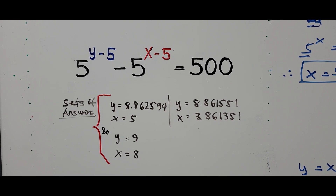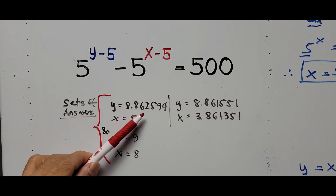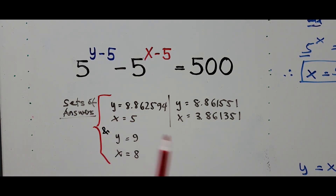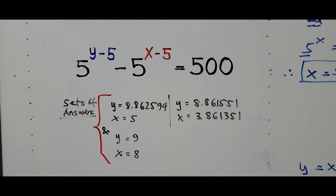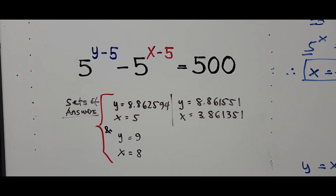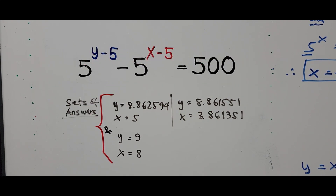We have found three sets of solutions. First solution: y ≈ 8.862594, x = 5. Second solution: y ≈ 8.861551, x ≈ 3.861353. Third solution by investigation: y = 9, x = 8. That's all for now. For those new to my channel, please don't forget to like and subscribe for more videos. Thank you for watching, have a great day everyone, see you in the next video!